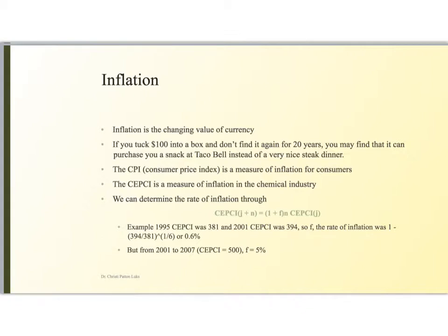If you looked from the period from 1995 to 2001, the CEPCI changed from 381 to 394 over that time period. This was a six-year period, so the sixth root of 394 over 381 is 0.6%, just over half a percent inflation. But if you look at the next six-year period, 2001 to 2007, when the CEPCI grew to 500, you see the inflation rate is 5%. This inflation rate will vary over time.